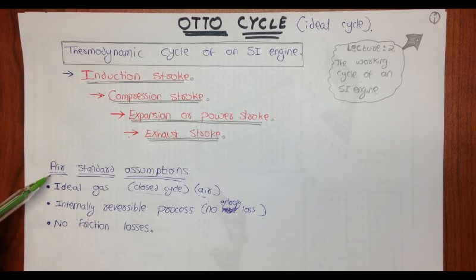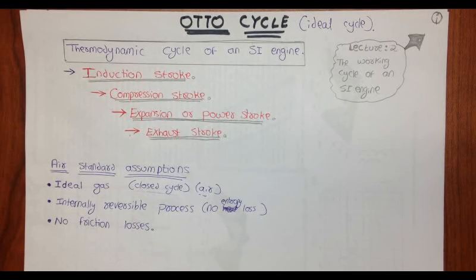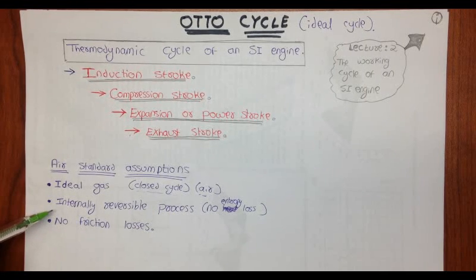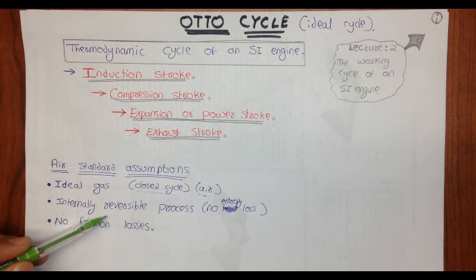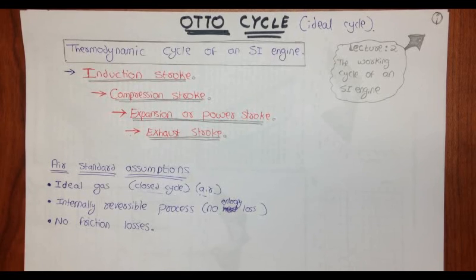The air standard assumptions are: (1) the gas and air mixture is modeled as air and an ideal gas continuously circulating in a closed cycle, so there are no intake and exhaust processes; (2) all processes are internally reversible with no entropy loss; (3) the combustion process is replaced by a heat addition process from an external source; and (4) the exhaust process is replaced by a heat rejection process and the gas returns to its initial state.